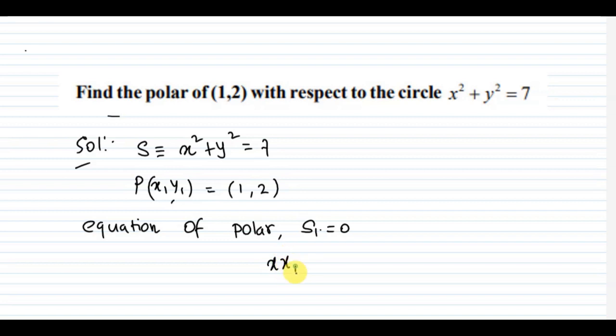Now, we know that from the formulas, equation of polar. So, the formula for polar is S1 equal to 0.